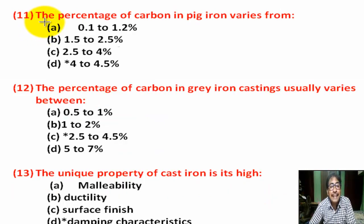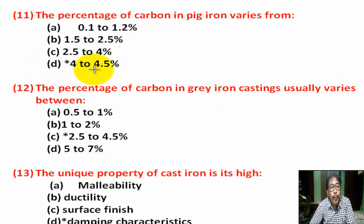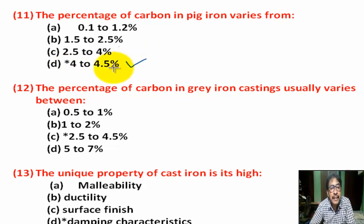Question number 11: The percentage of carbon in pig iron varies from — Option A: 0.1 to 1.2%. Option B: 1.5 to 2.5%. Option C: 2.5 to 4%. Option D: 4 to 4.5%. Correct answer is Option D — 4 to 4.5%.